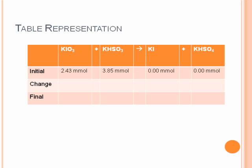So moving to our table representation, we can now add some information to it. We find that we get 1.28 millimoles of Ki, like we just said, and we use up all 3.85 millimoles of our limiting reactant, ending up with none.